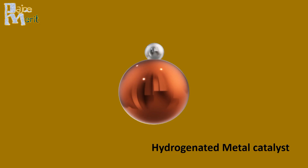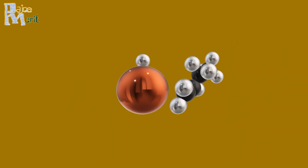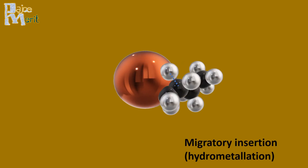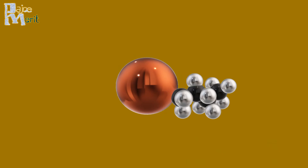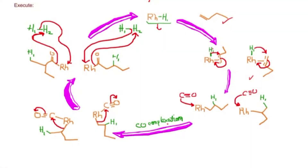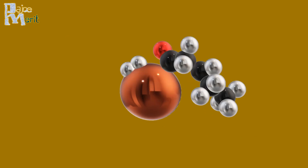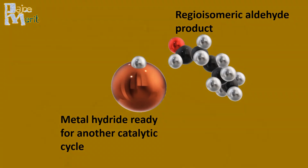Thanks for following through. To summarize: the first step is pi complex formation, followed by a migratory insertion called hydrometallation, then carbon monoxide complexation with the alkyl-metal complex, followed by a second migratory insertion called carbonylation, and finally reductive cleavage. The first product is actually the more favorable one. Stay smart and believe in yourselves.